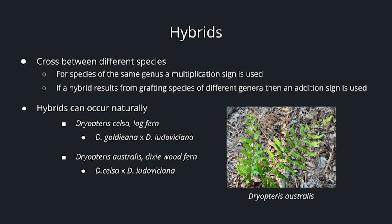Hybrids are crosses between different species. For species of the same genus, a multiplication sign is used. If a hybrid results from grafting species of different genera, an addition sign is used. Hybrids can also occur naturally. An example is Dryopteris australis — the Dixie wood fern — whose parents are Dryopteris celsa and Dryopteris ludoviciana. Species celsa is actually a hybrid itself, a hybrid of Goldiana and Ludoviciana, and then that one hybridized again with one of its parents — and that's what produced the Dixie wood fern.